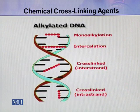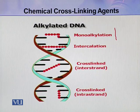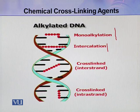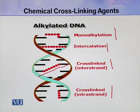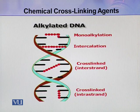Here you can see different types of DNA damages. For example, here is monoadduct formation, and here is intercalation — some chemicals are intercalated in the DNA. Here is the interstrand crosslink, which is between two strands, and here is the intrastrand crosslink, which is within the same strand. So these are different types of reactions which damage the DNA.